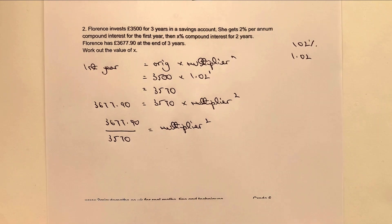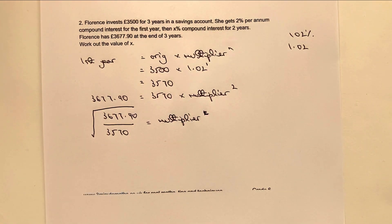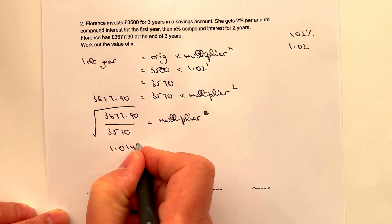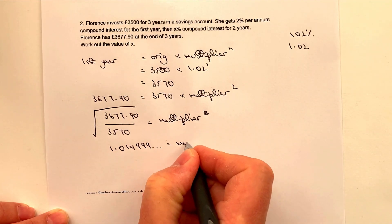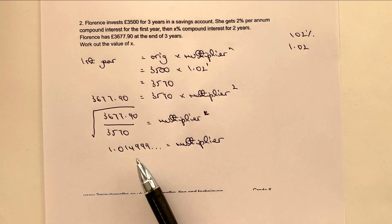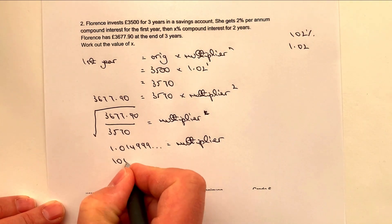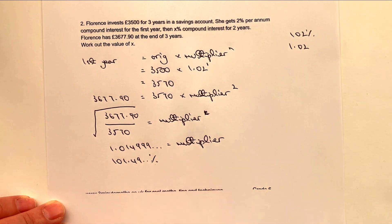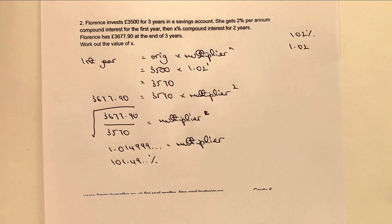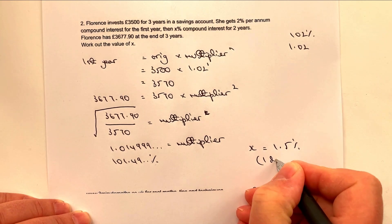I don't want the multiplier squared — I want the actual multiplier — so I'm going to square root it. When I put that into a calculator, it gives me the actual value of the multiplier, which is 1.014999 recurring. Remember, this is the decimal equivalent, so if I multiply by 100 I get 101.49 recurring percent. So the actual value of X is 1.49% recurring, which I'll round to 1.5% to one decimal place.